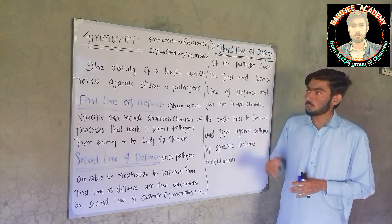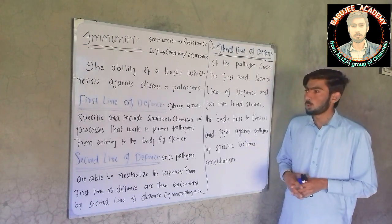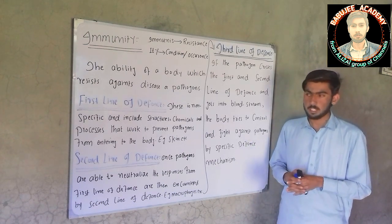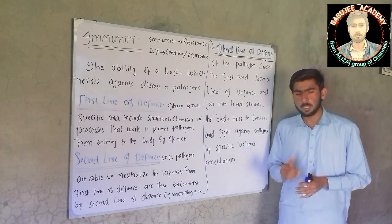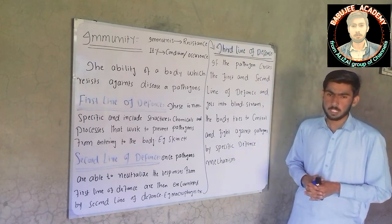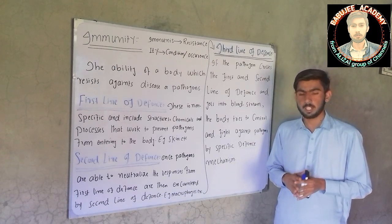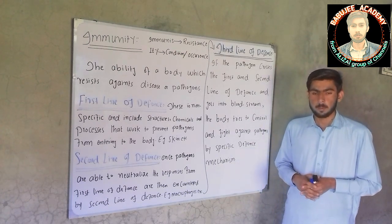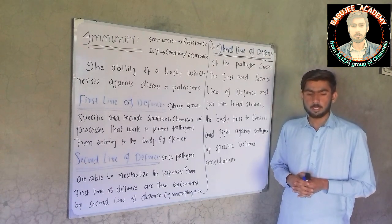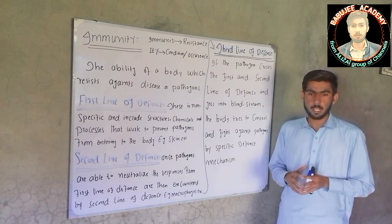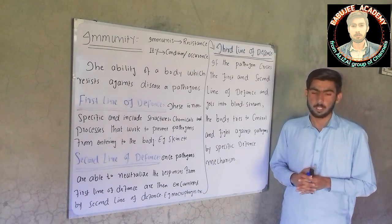What is immunity? Immunity is the ability of a body which resists against disease or pathogens. That ability of our body which protects us from diseases or pathogens — pathogens are disease-causing agents. Immunology is the branch of biology in which we study about the immunity system.